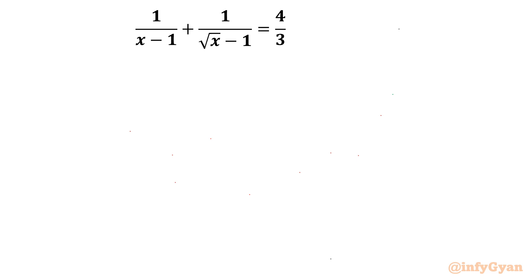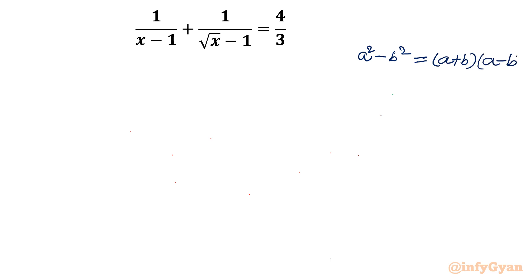I will begin with one identity which I will use mainly here — that is the difference of two squares, which we know: a squared minus b squared is equal to a plus b times a minus b.